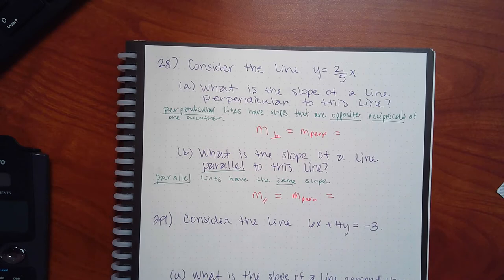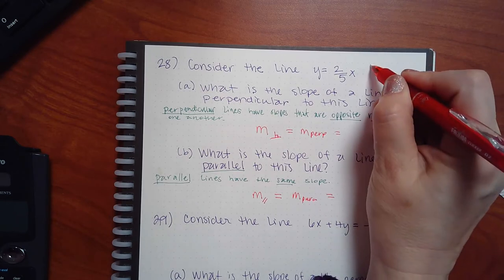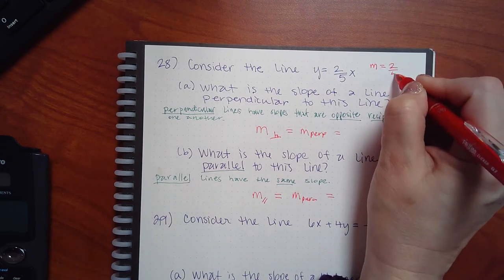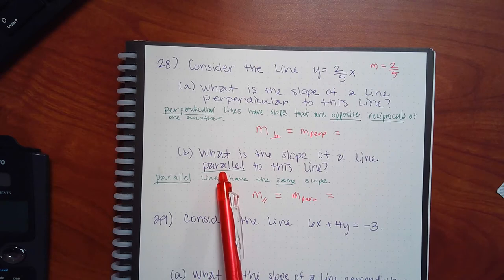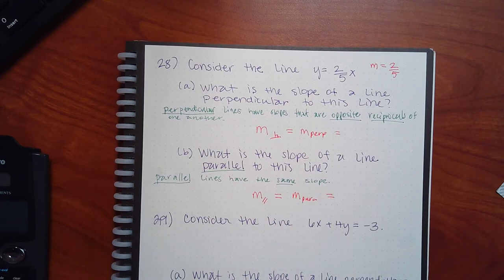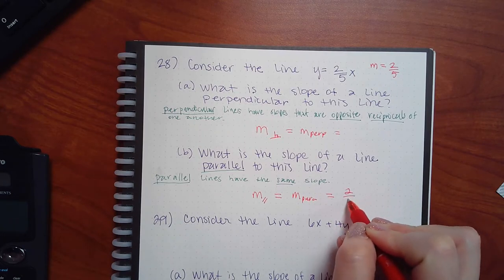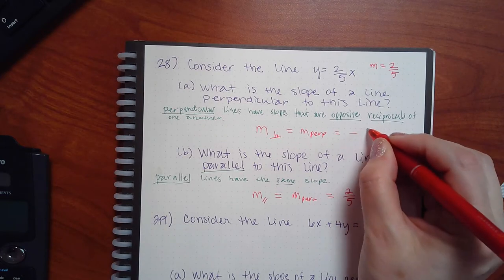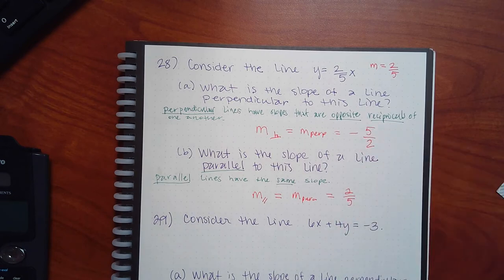Now for this problem: the slope of the given line is two-fifths. If I want a parallel slope, it's supposed to be the same — so the parallel slope is also two-fifths. The perpendicular one is the harder one: I need the opposite reciprocal. So that perpendicular slope is negative five over two — opposite sign and flipped.